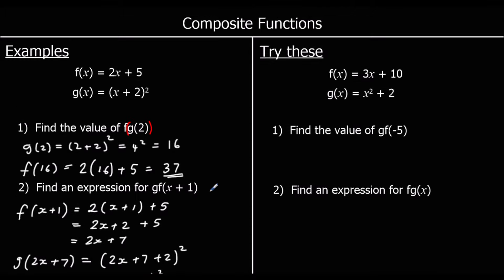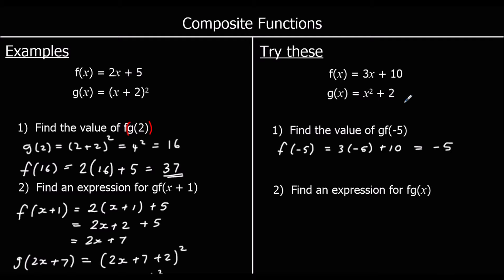Two more for you to try. Question 1: find the value of gf of negative 5. Put negative 5 into f first: f of negative 5 is 3 lots of negative 5 plus 10, which is negative 15 plus 10, equals negative 5. Now put negative 5 into g: g of negative 5 is negative 5 squared plus 2, which is 25 plus 2, equals 27.